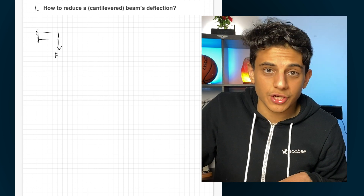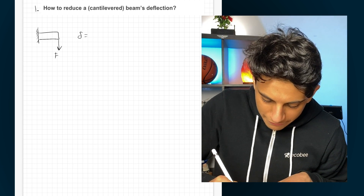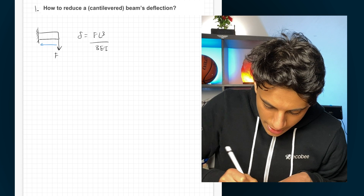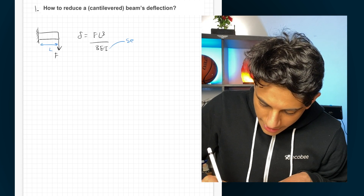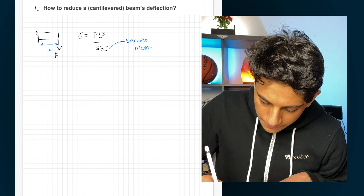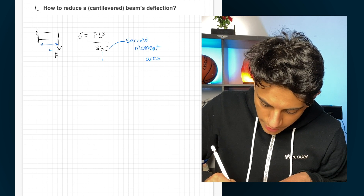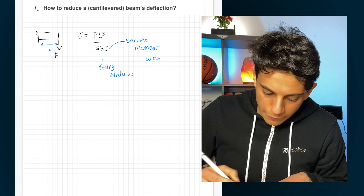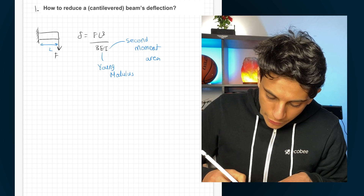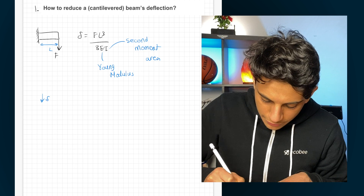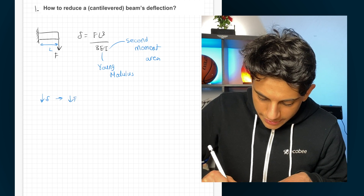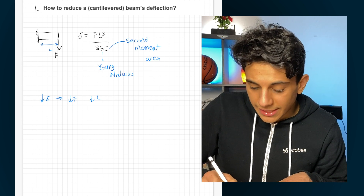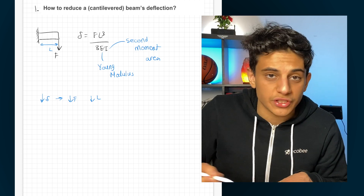There's a general deflection equation: deflection equals FL³ over 3EI, where L is the length of the beam, I is the second moment of area, and E is the Young's modulus. To reduce deflection, you can reduce the force or reduce the length. It's important to note that since length is cubed, changing it makes a much bigger difference than changing the force.